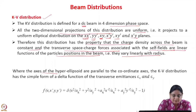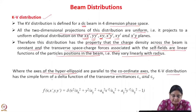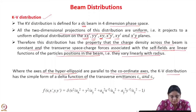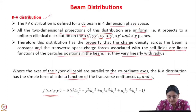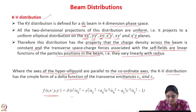Where the axes of the hyperellipsoid are parallel to the coordinate axes, the KV distribution has a simple form — a delta function of the transverse emittances epsilon x and epsilon y. You can write the KV distribution as a delta function of x-squared over Ax-squared, where Ax is the beam size in x, plus y-squared over Ay-squared, where Ay is the beam size in y, plus Ax-squared x-prime-squared over epsilon-x-squared, plus Ay-squared y-prime-squared over epsilon-y-squared, minus 1.